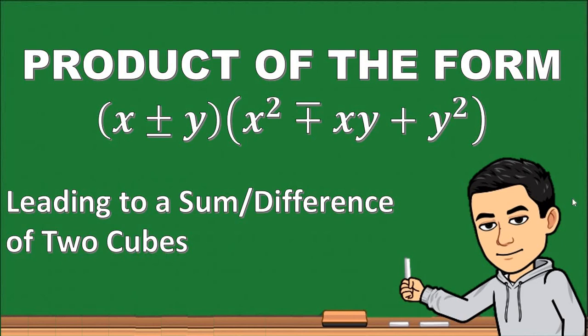Hi everyone, welcome to my channel. Today, we will discuss how to multiply polynomials of the form x plus or minus y times the quantity x squared minus or plus xy plus y squared. The result leads to a special product called sum or difference of two cubes.